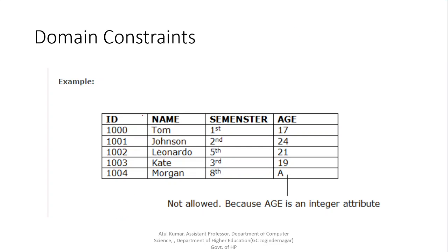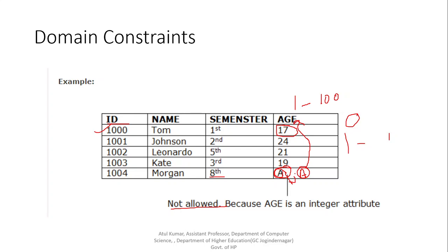For example, consider a relation with attributes ID, name, semester, and age. The domain of age is integer, ranging from 1 to 100. For a row with ID 1004, name Morgan, semester 8, and age 'a' — the value 'a' is not in the domain of the age attribute since age must be an integer. Therefore 'a' is not allowed, and this entry violates the domain constraint.